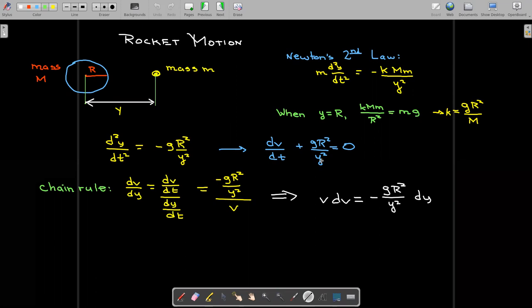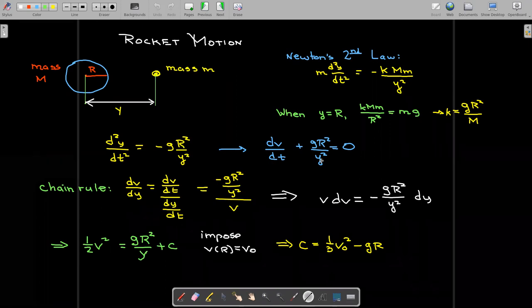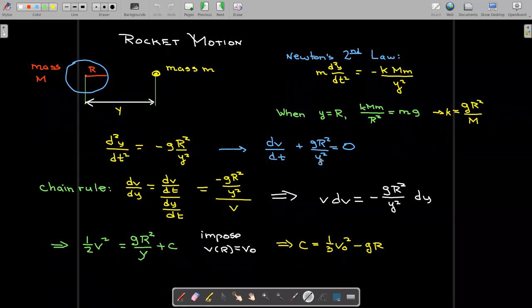Now I have a differential equation where I can use separation of variables. If I integrate both sides, I'll get that ½v² = gR²/y + some constant. Now suppose that we're lifting off from this mass, so maybe we're on the Earth and we want to lift off with a certain initial velocity, which we'll call v₀. So we get a boundary condition that v(R) = v₀. That allows us to solve for c being ½v₀² - gR.